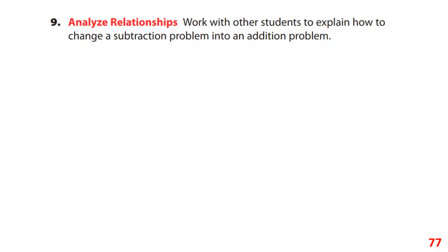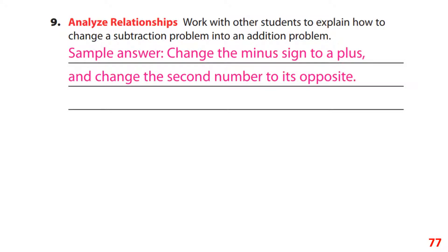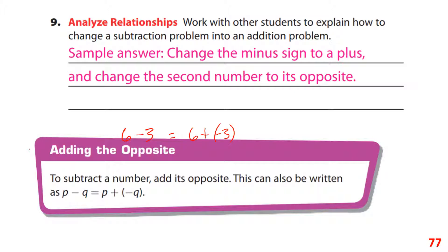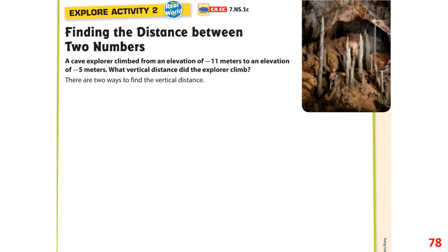To change a subtraction problem into an addition problem, change the minus sign to a plus sign and use the opposite of the second number. For example, 6 minus 3 equals 6 plus negative 3. The parentheses separate the operation sign from the number's sign. This is called 'adding the opposite': p minus q equals p plus negative q.